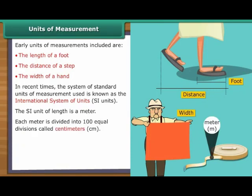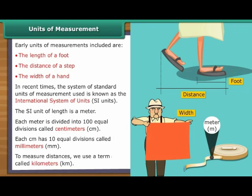Each metre is divided into 100 equal divisions. These are called centimetres or CM. Each centimetre has 10 equal divisions. These divisions are called millimetres or MM. To measure distances, we use a term called kilometres or KM.